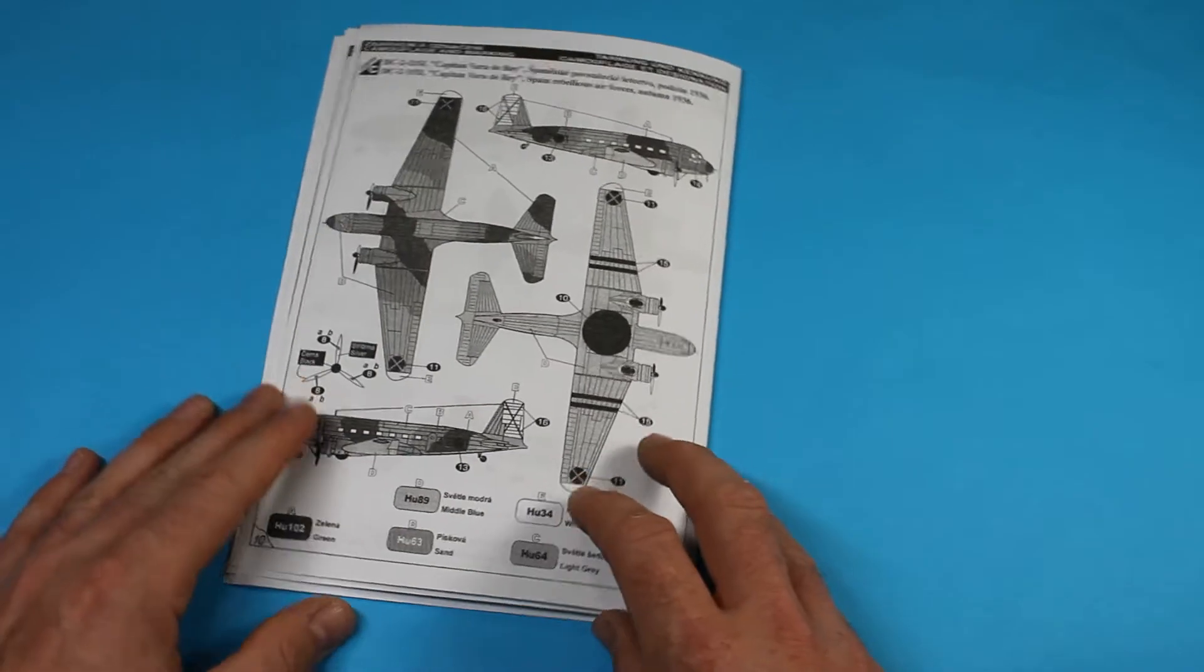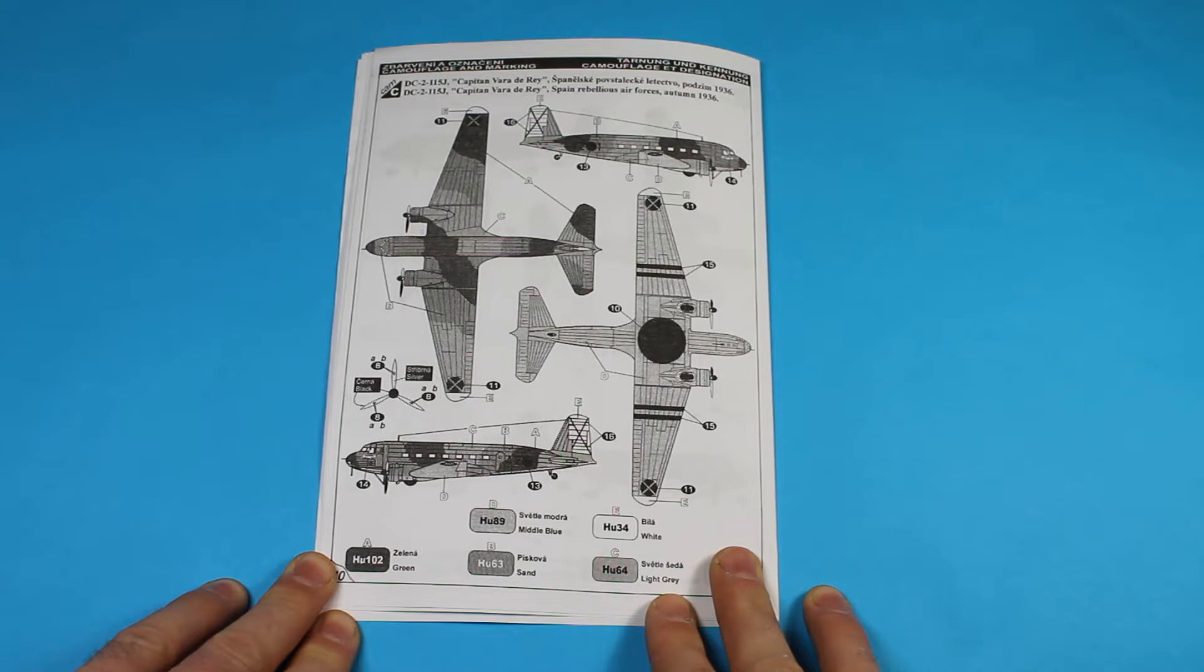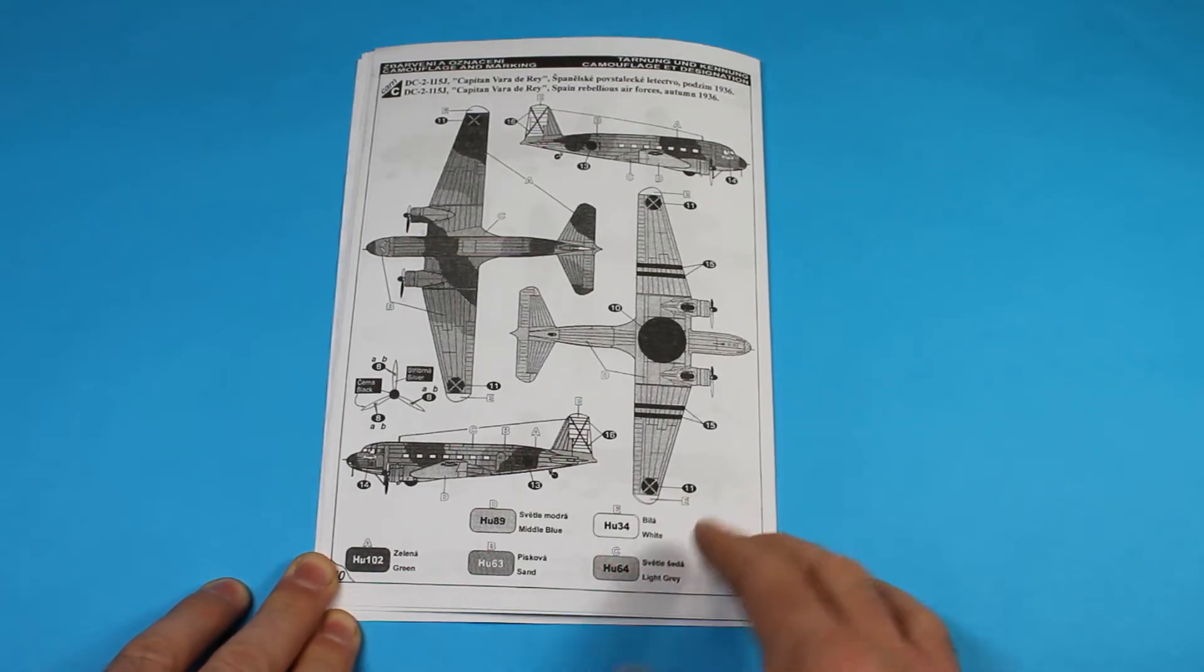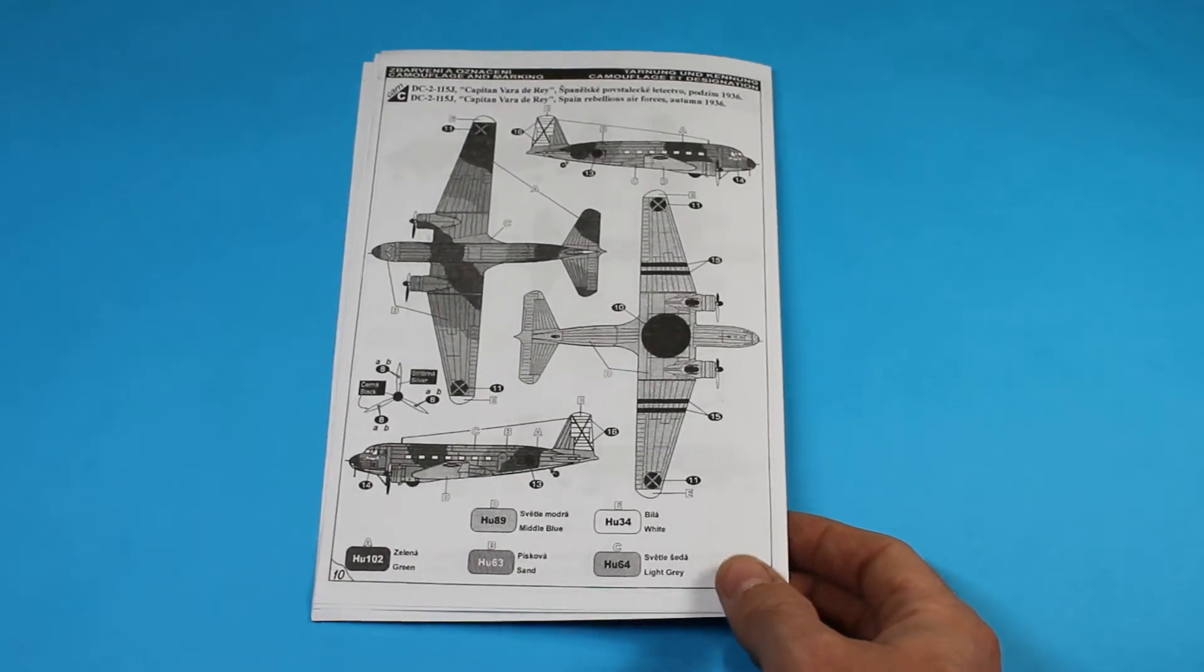Then you've got a Camouflage version and a light blue-gray version. Going over, we've got a Spanish Civil War nationalist version here, which is the one flown by Captain Vare de Rey, written here as the Spanish Rebellious Air Forces in autumn 1936. It's the nationalists.